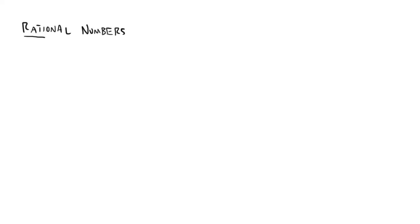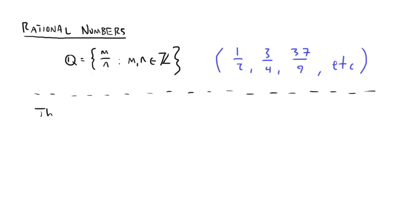Now, what about the rational numbers? These are all the numbers we get by taking fractions of integers, like one-half, three-fourths, or 3,709, for example. The difference with the rational numbers is that they're dense. Between any two rationals, you can always find another one. This bizarre property might lead you to believe that the rationals are uncountable.